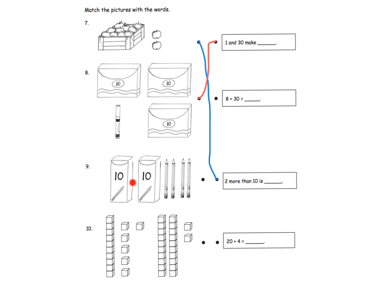Down here I've got two tens and four ones, so two tens and four ones goes right there. And by a process of elimination, we know this last one goes up here — but let's see why. We've got three tens right here, so that's 30, and then one, two, three, four, five, six, seven, eight — so we have three tens and eight. And there it is: three tens and eight, so that goes right there.